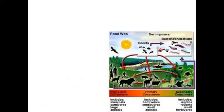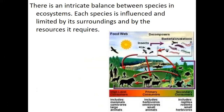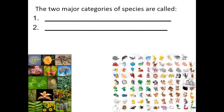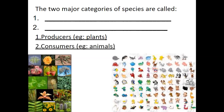Here is what we know about ecosystems. Ultimately there is an intricate balance between all the different species within an ecosystem. Every single species is influenced by the organisms, the predation, the competition, its ecological niche, etc. If we were to compartmentalize all species into two major categories, organisms are either producers — plants — or consumers — animals. Producers are your autotrophs; consumers are your heterotrophs.